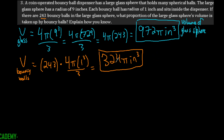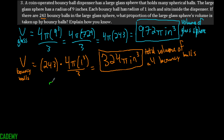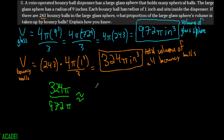To find the proportion of the glass sphere's volume taken up by the bouncy balls, divide: 324 pi over 972 pi equals approximately 0.333 repeating, which is about 33 percent.